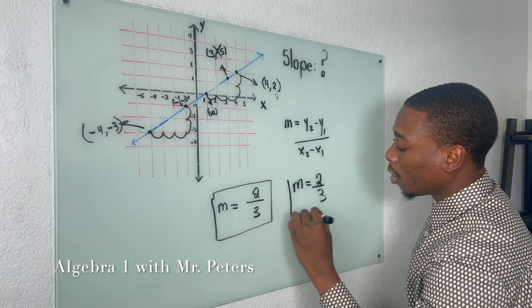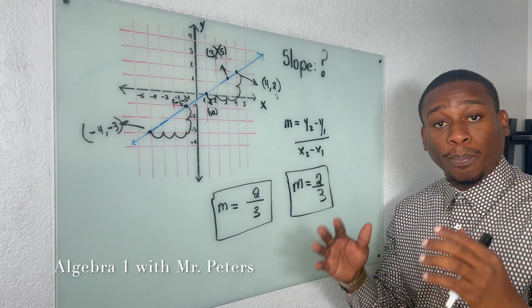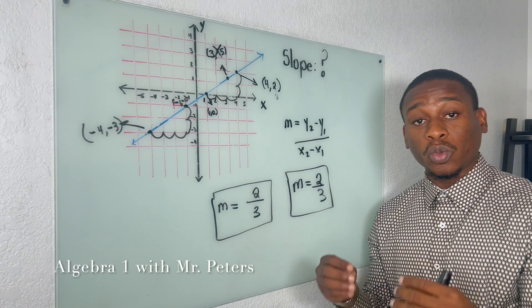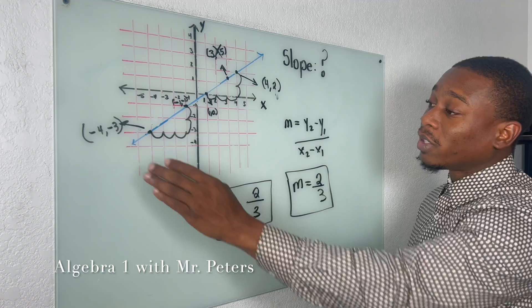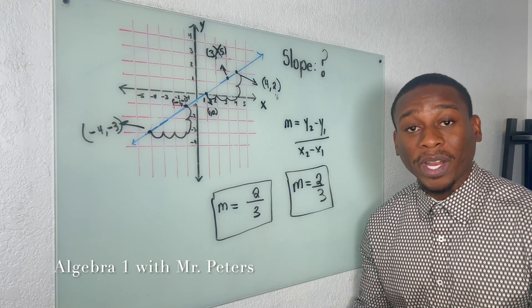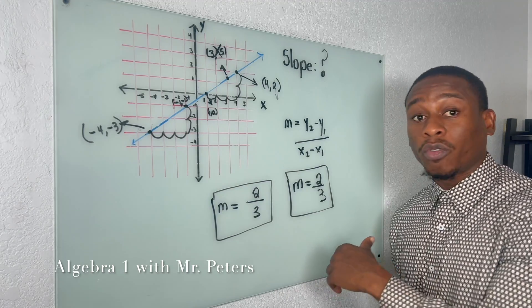Now when we go to our other point, right, one, two, three, one, two, we're gonna notice that we get the same slope of two over three. So understand guys, in any problem that we do on linear equations, a straight line, the slope is gonna be the same no matter what point that we pick.